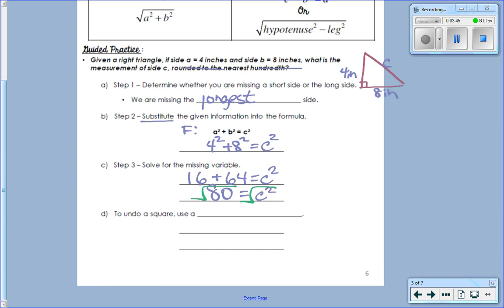What times what gives you C? C times C. The square root of C squared is just C, which is what we want. To undo a square, use a square root. Square root of C squared is C. And I'm going to put an about symbol. It's not going to be exact. The square root of 80.